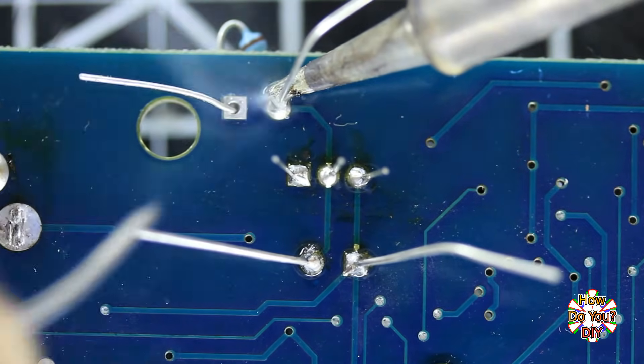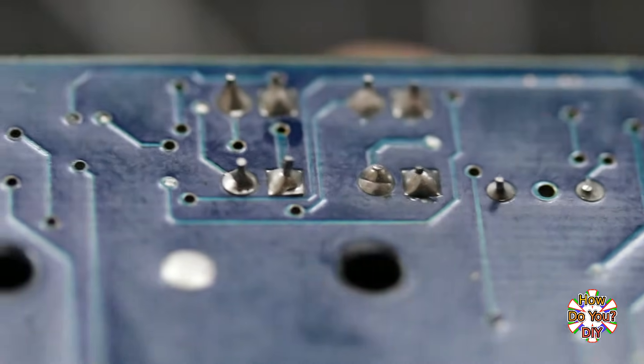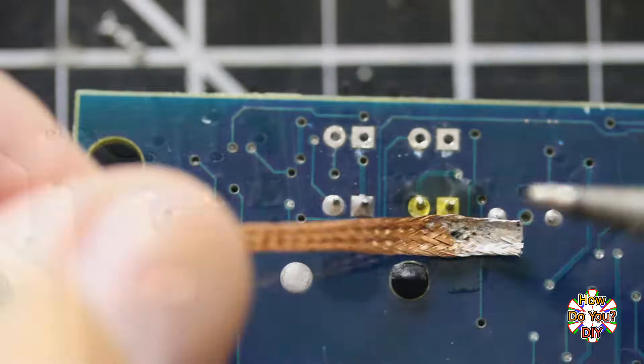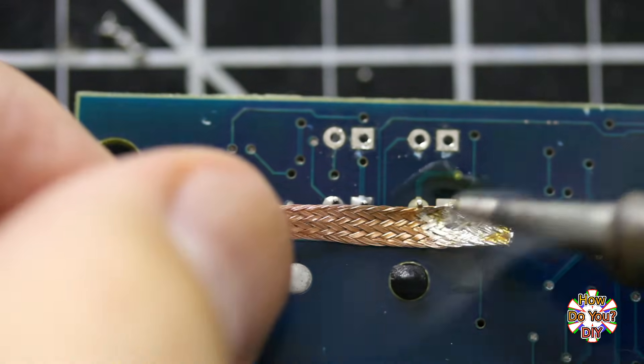Sometimes when you're soldering, you just need to remove some parts. I'm going to show a few methods for removing parts that are soldered to a circuit board.